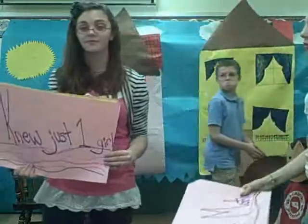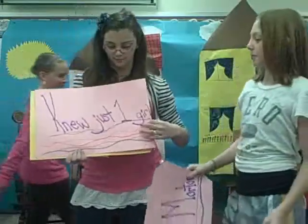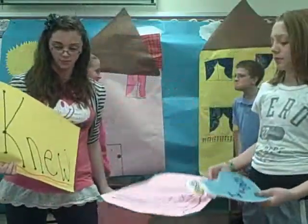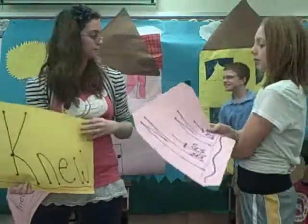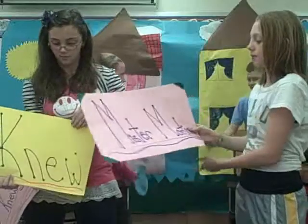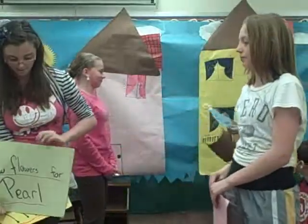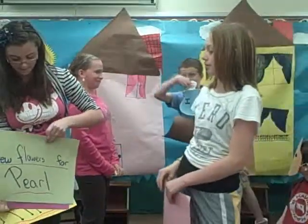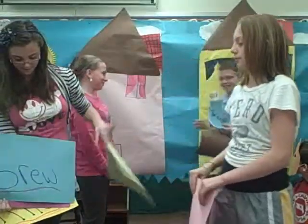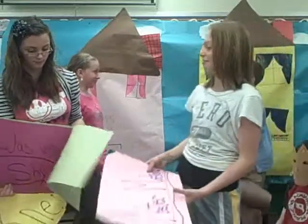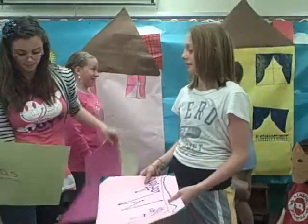Mr. Morton knew just one girl — Mr. Morton knew. Mr. Morton grew flowers for Pearl — Mr. Morton grew. Mr. Morton was very shy — Mr. Morton was.